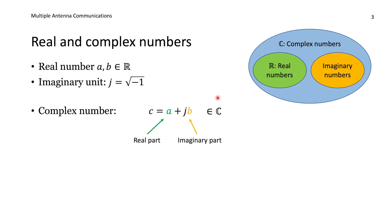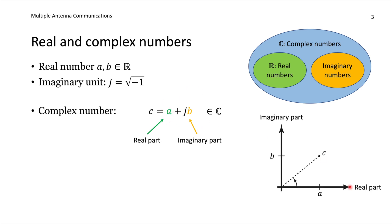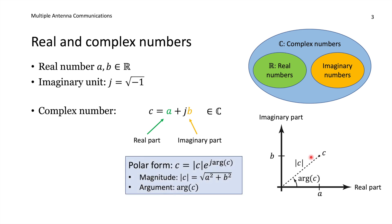Since complex numbers have two dimensions — a real part and an imaginary part — we can draw them in a two-dimensional way, with the real part along the horizontal axis and the imaginary part along the vertical axis. This representation with a real part and an imaginary part is called the Cartesian form. There is another form that is also very common: the polar form.